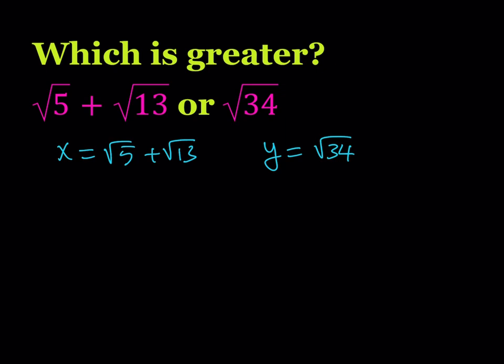And then I'd like to get rid of some of the radicals. Let's square both sides here. We get a squared plus 2ab plus b squared. And here we get 34.